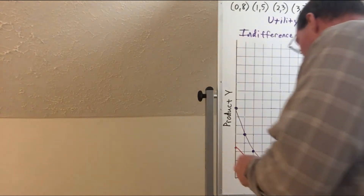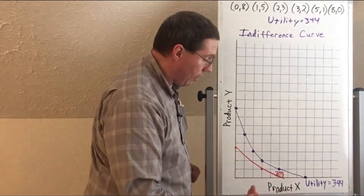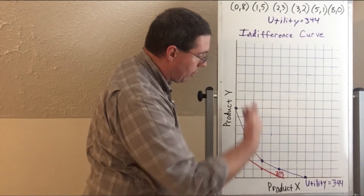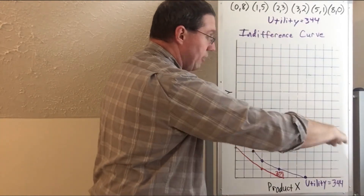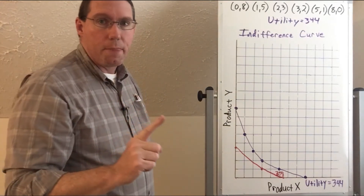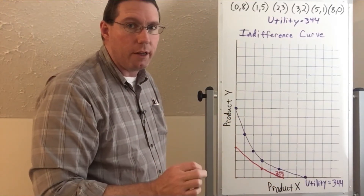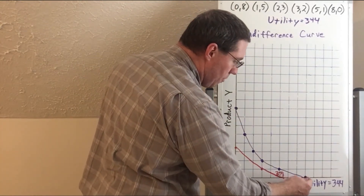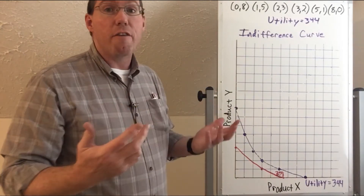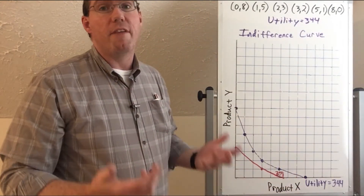Remember what we said before when we looked at the lines? The curves farther away from the origin have higher utility. Sure enough, this purple curve is 344 and this red curve is 258. We could make more curves in here, and if we had more information, we'd have more curves going out — as they go out, they represent higher and higher levels of utility. The main thing to remember is that every single point along a curve has the exact same amount of utility.